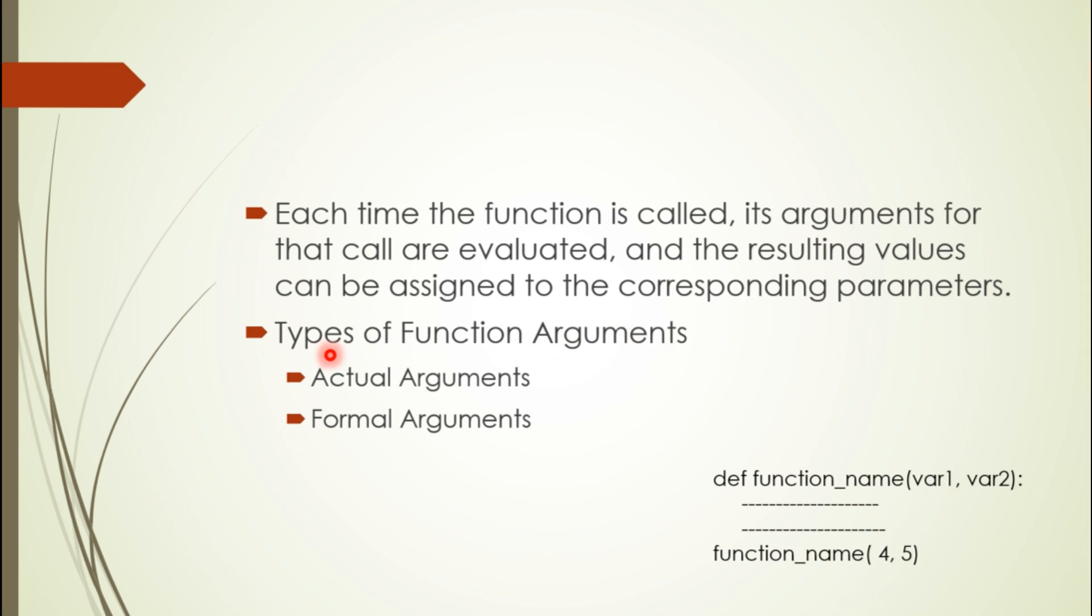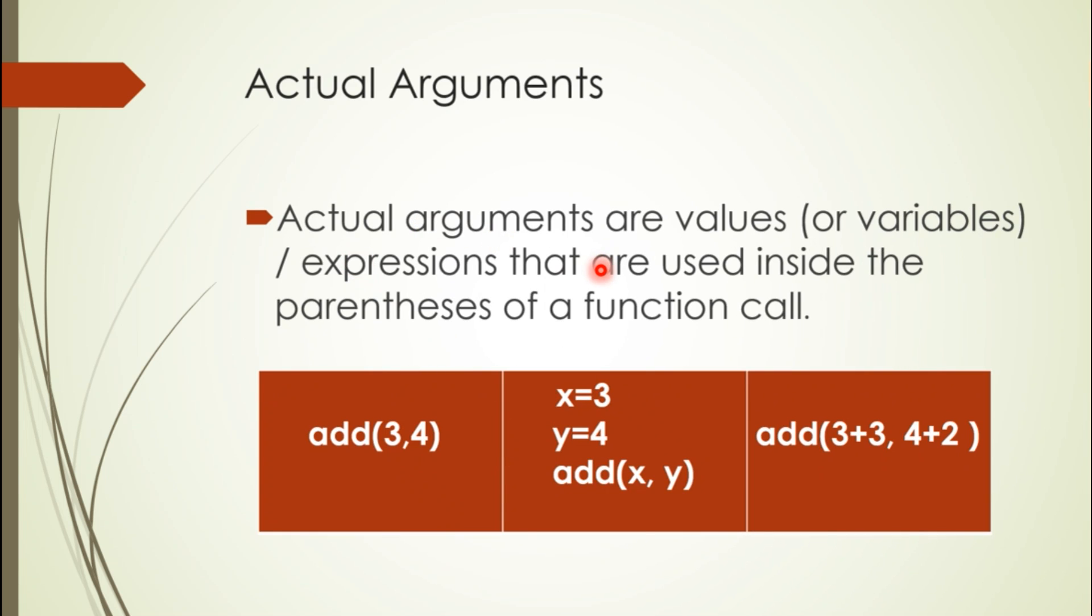Function arguments are of two types: first is the actual argument, and second is the formal argument. Actual arguments are values or variables or expressions that are used inside the parentheses of a function call. When we call a function, whatever values we provide in the parentheses are called actual arguments. Generally, we provide values or constants that the function can compute.